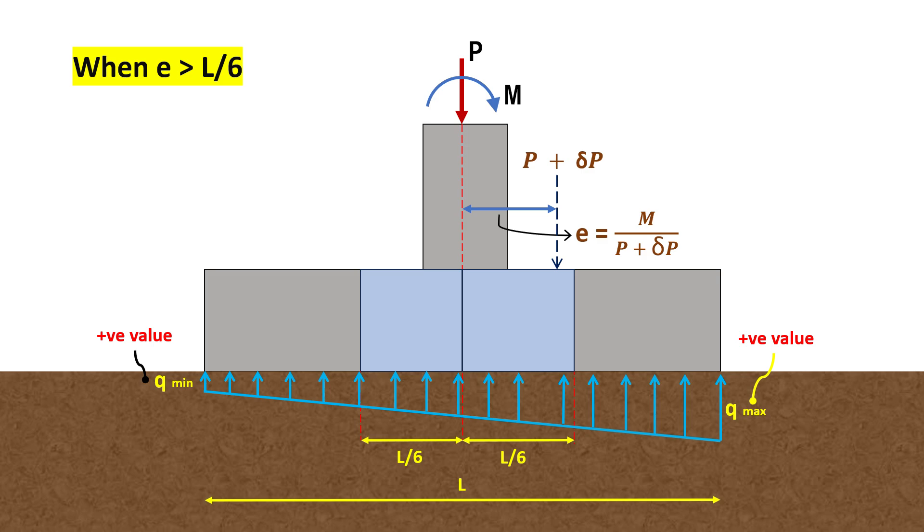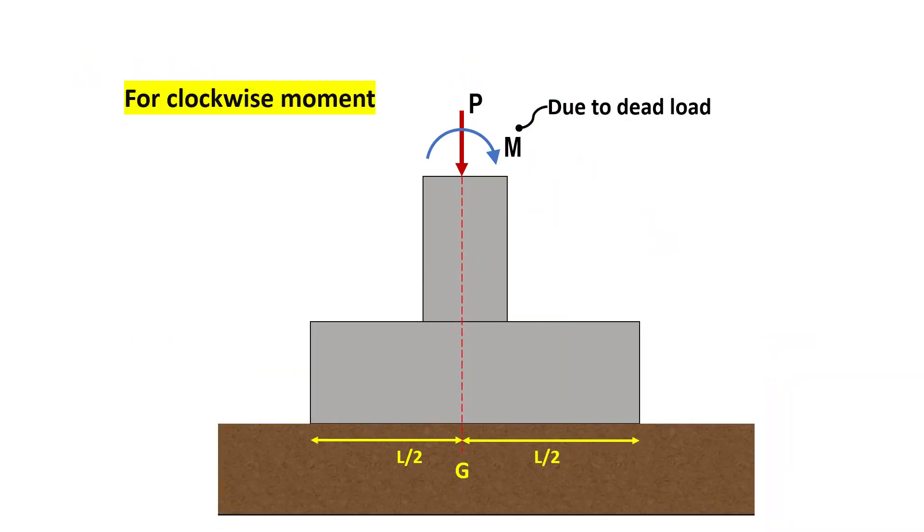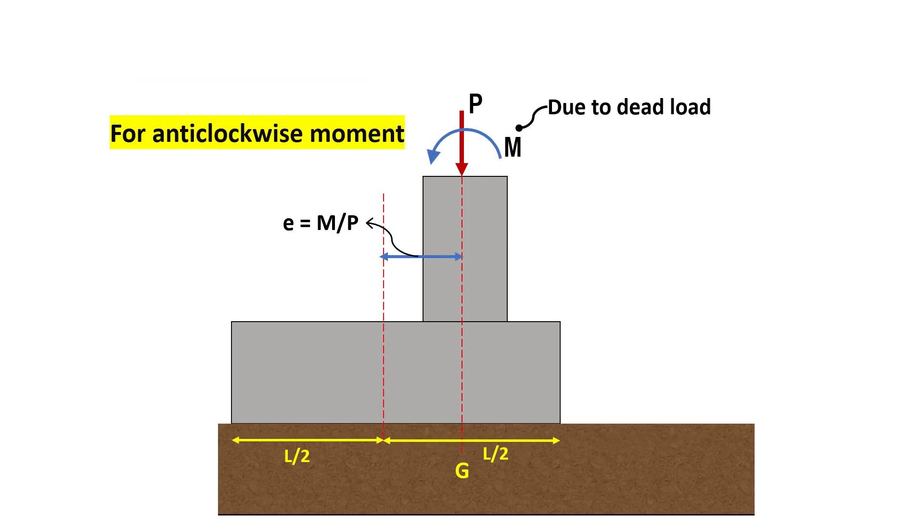To minimize tilting under sustained eccentric loads, the footing base can be shifted laterally relative to the column. For example, if the moment M is due to dead loads and is irreversible, the footing can be shifted in the direction of eccentricity to achieve a uniform pressure distribution. For clockwise moments, the footing moves right. For anti-clockwise moments, it moves left.